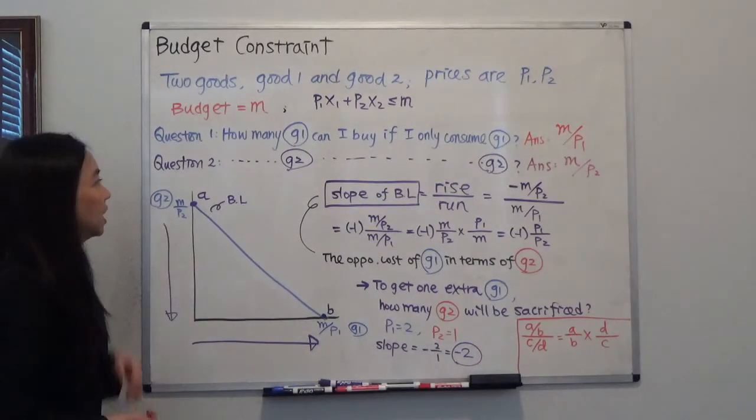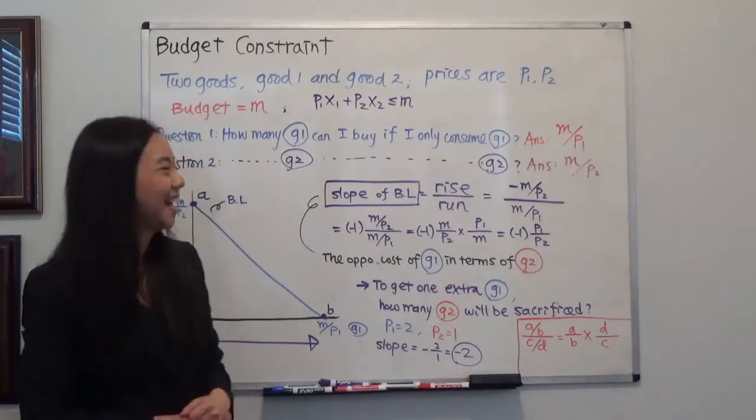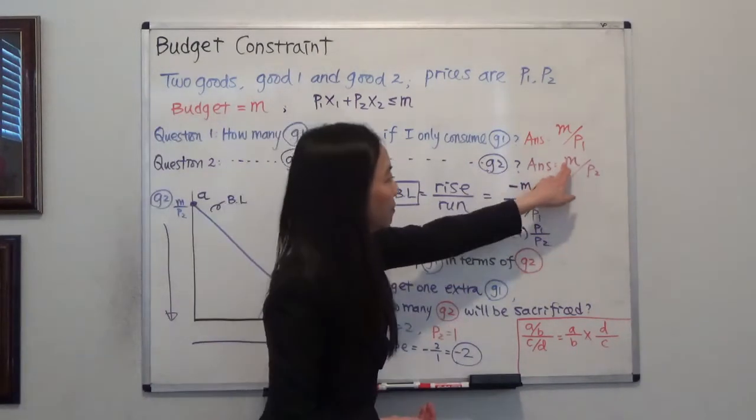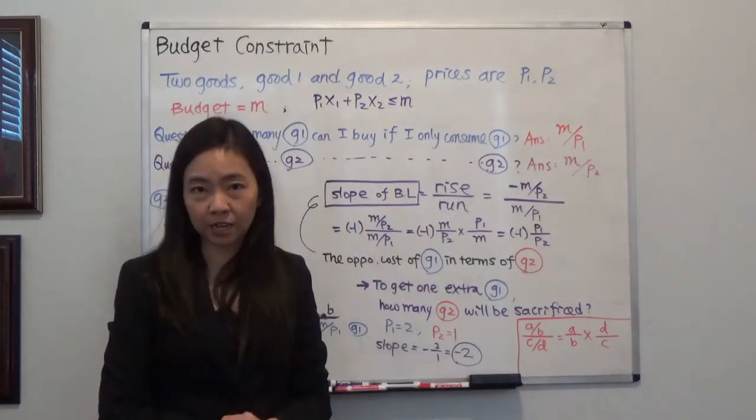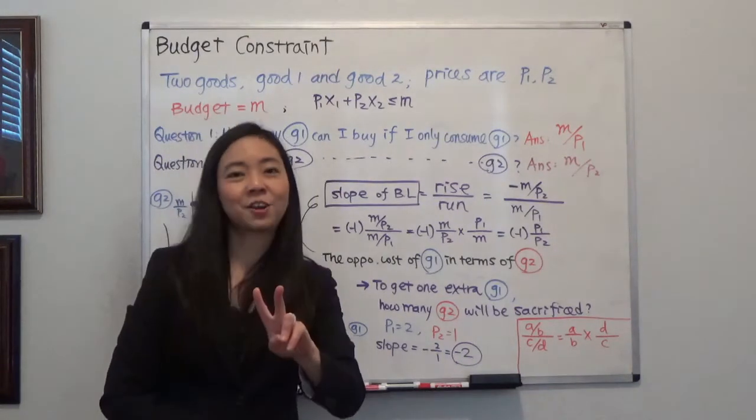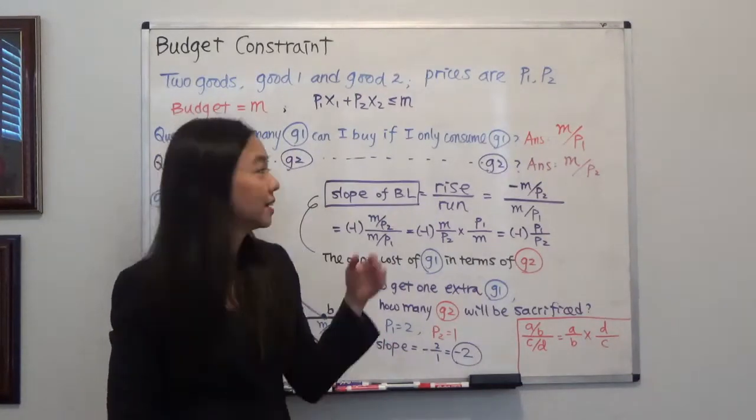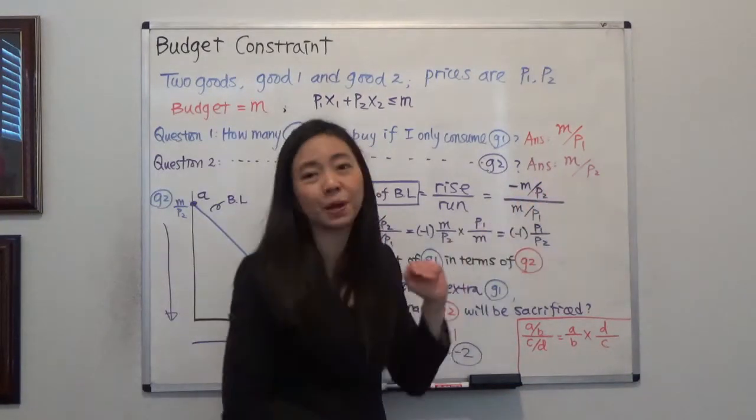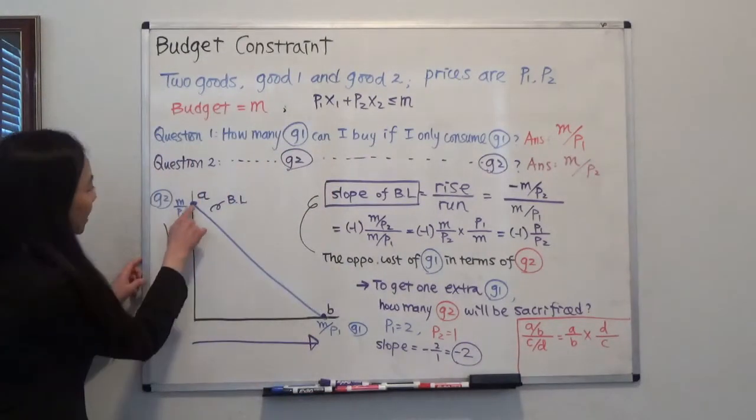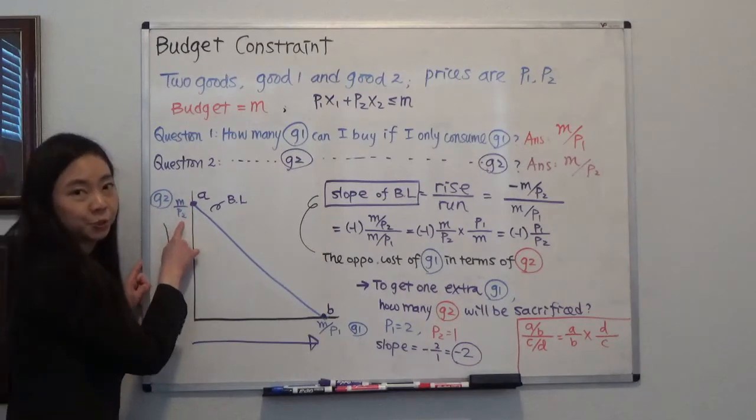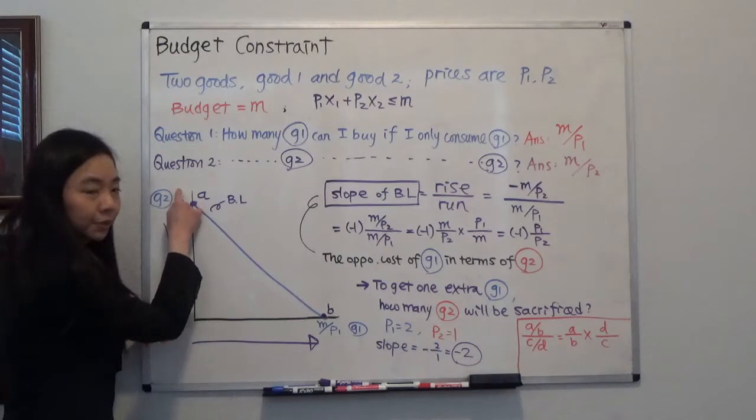The second question is: if I only buy good two, then how many units of good two can I purchase? The answer will be M divided by P2 units of good two. Suppose the price of the orange is one dollar and you have 20 dollars. If you don't buy any apple, then how many oranges can you buy? The answer will be 20 divided by one which gives you 20 oranges. So I can find the other intercept M divided by P2. Here is the number of good one I can purchase and here's the number of good two I can purchase.